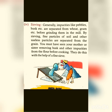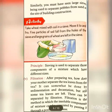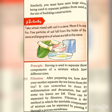आपने देखा होगा बालू जब चाली जाती है तो बालू के छोटे particles चलनी से नीचे हो जाते हैं और जो बड़े-बड़े rocks या stone types होते हैं वो चलनी के ऊपर रहते हैं। The principle of sieving is used to separate those components of a mixture which have different sizes.